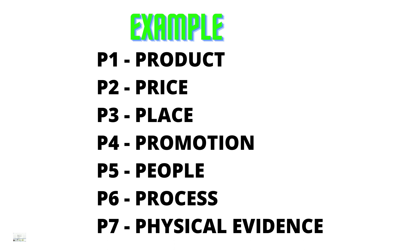For the fifth P, people — a marketer thinks of everyone the business comes into contact with as a potential customer. For the sixth P, process — the process is the complete buying experience, from the first point of contact, which is usually a website nowadays, through to delivery of the product or service.